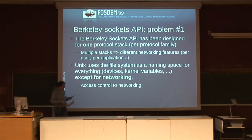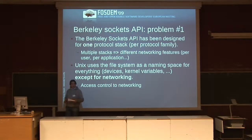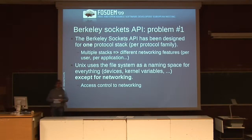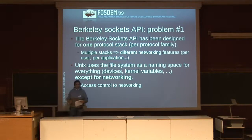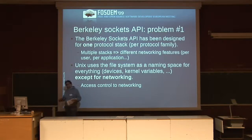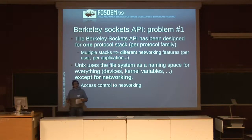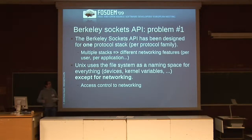Another point: the filesystem is a source of naming for almost everything in Unix, but not networking. Networking is not on the filesystem; there is no device related to networking. So if you want to limit access to networking for some users, you have no other means but using IP tables with strange configurations. Whereas if you want to restrict access to a device, you just change the permissions on a file.